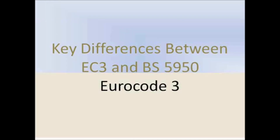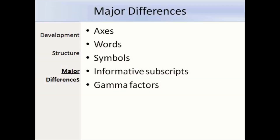Now I'll go through some of the major differences between Eurocode 3 and BS 5950. There are several changes: the member axis, words used, different symbols, informative subscripts are used, and you'll come across a lot of gamma factors in your design.